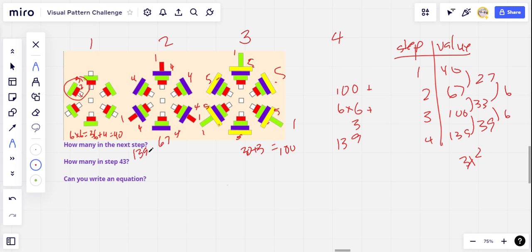There's more than that going on here, though, because 3 times 1 squared would be 3. And we have 40 here. So that's not even close to expressing the 40 blocks in step 1.